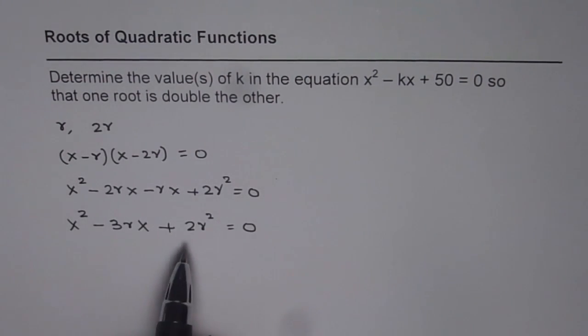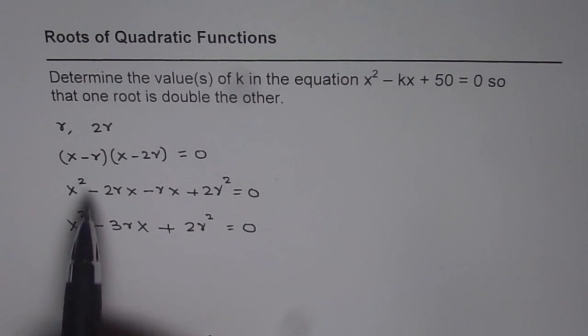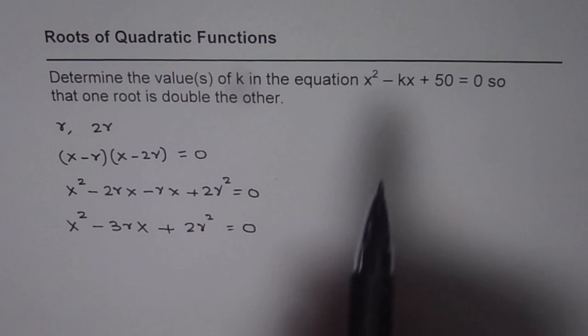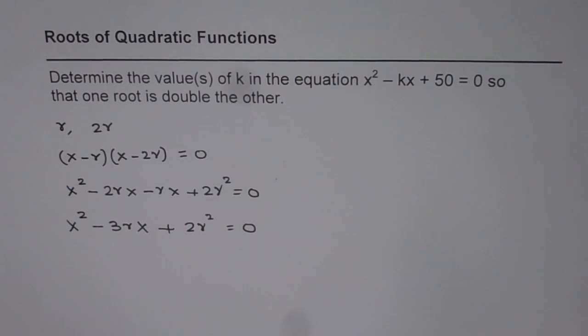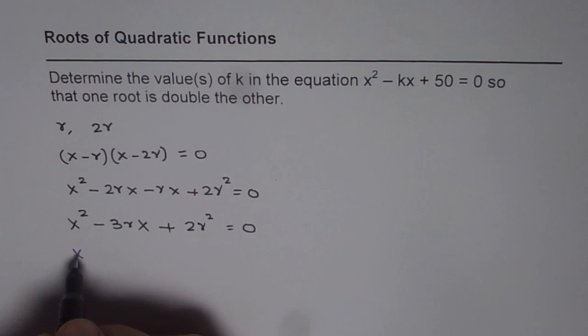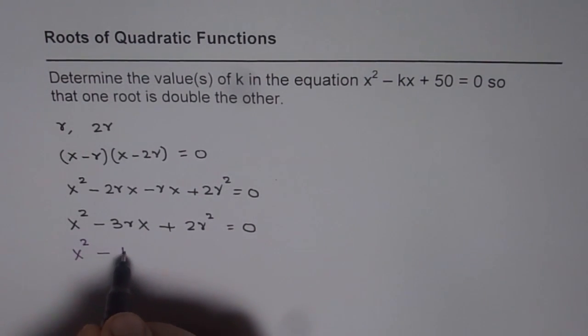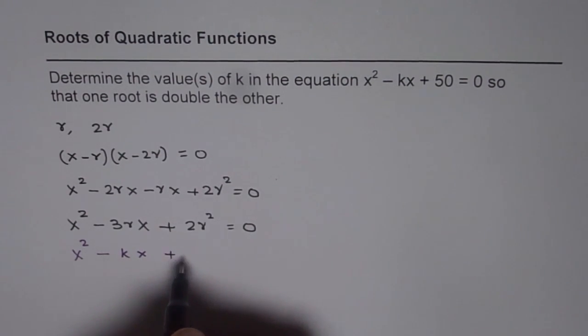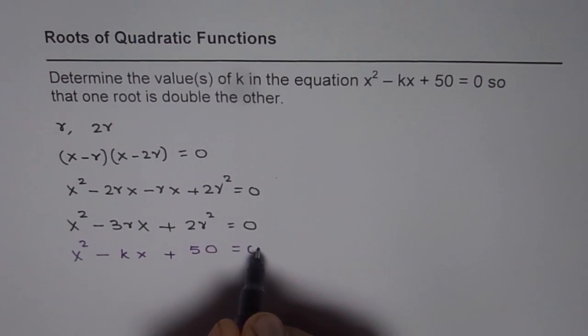That is the equation in general for a quadratic equation having roots whose ratio is 1 to 2. Now, we are given the equation as x² - kx + 50 = 0.